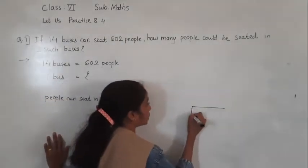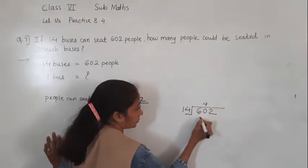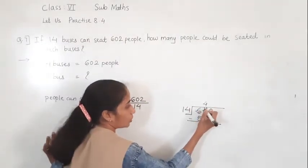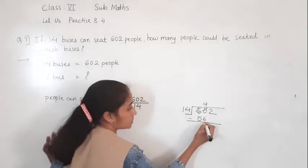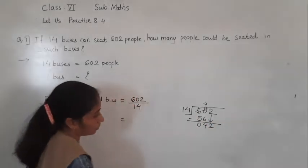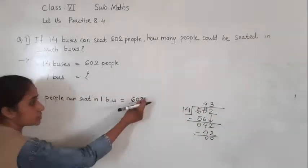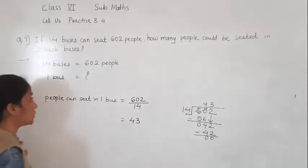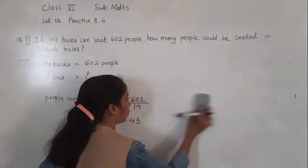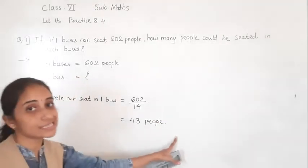So here I will show the calculation. 602 divided by 14. 14 fours are 56. 10 minus 6 is 4. 5 minus 5 is 0. Then 42 remains. 14 threes are 42. So 602 divided by 14 gives us 43. So 43 people can sit in 1 bus.